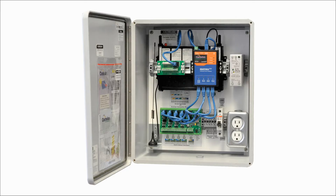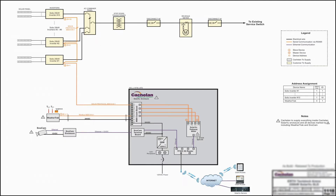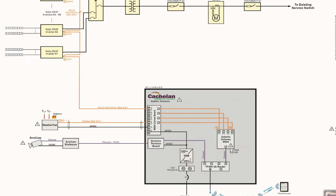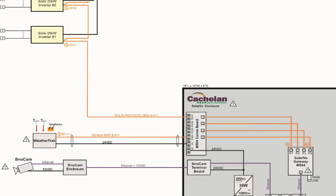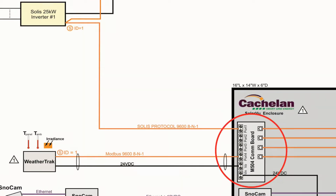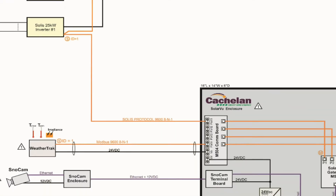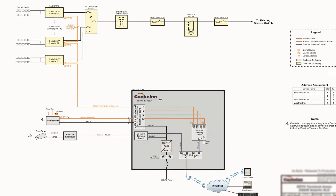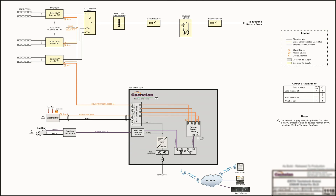Within the SolarView enclosure, there is a document pouch attached to the inside of the door, which contains documents relevant to the specific site. Among these documents, there will be a single line drawing, which displays the port that the inverters should be connected to on the COM board. In this case, it's port 1. I would advise that you hold on to this drawing, since it will be useful later on in the video when we are setting slave addresses.